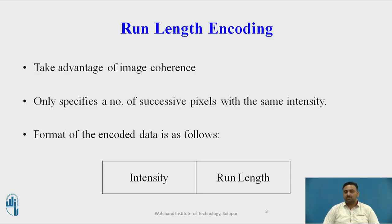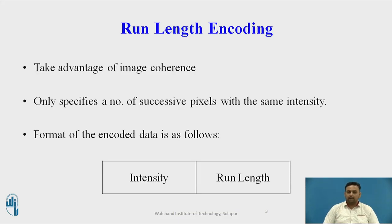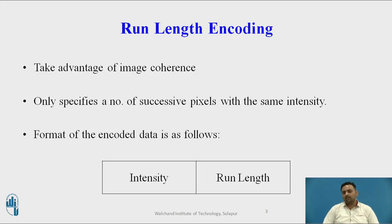Image coherence specifies a number of successive pixels with the same entity. Instead of storing every pixel value independently, we can store the value and the number of adjacent pixels holding that value. So the particular value and the number of successive pixels holding the same value will be described — this information is sufficient to describe the image.